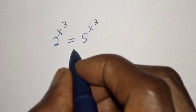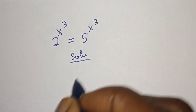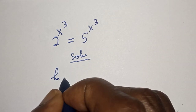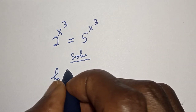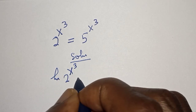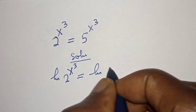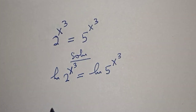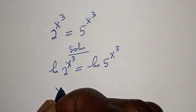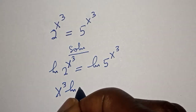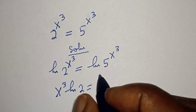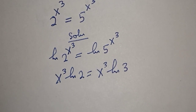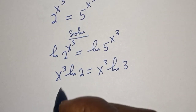Solution: let's take the log of both sides — that is, the natural log of 2 raised to power s³ is equal to the natural log of 5 raised to power s³. This gives us s³ times natural log of 2 is equal to s³ times natural log of 5.